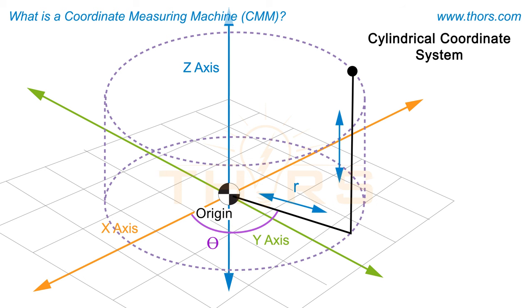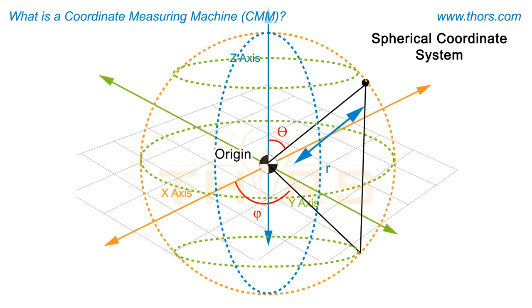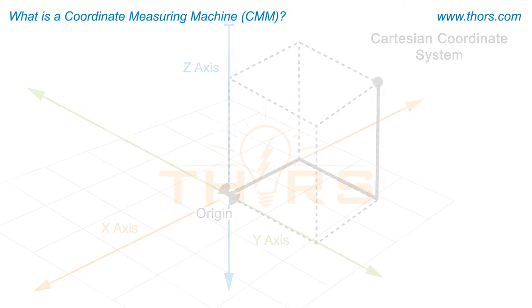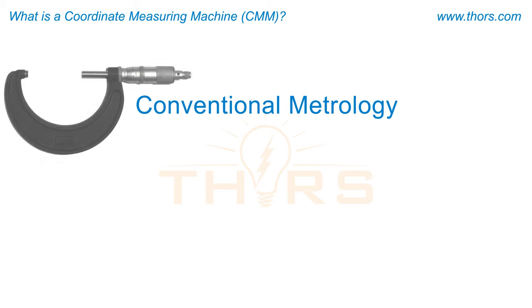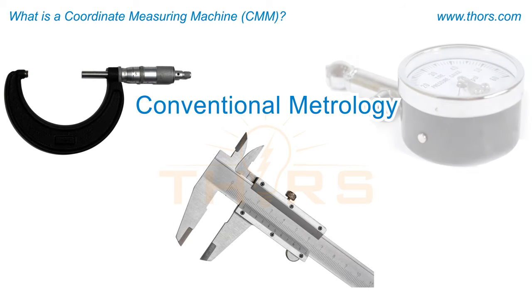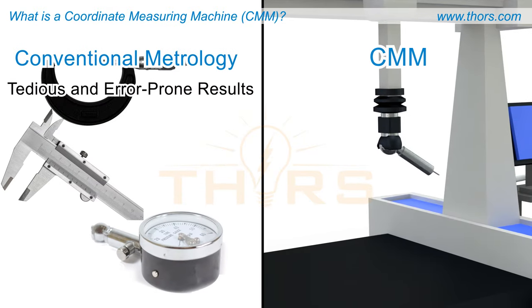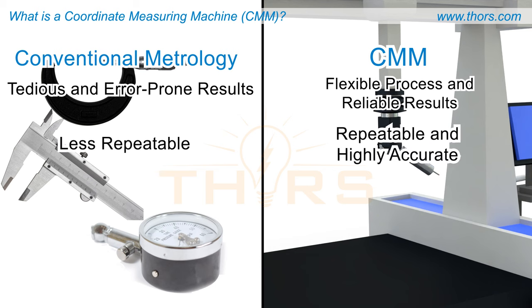CMMs allow coordinates of points obtained in one coordinate system to be converted to another coordinate system. A CMM has many advantages over conventional metrology. Measurements using conventional metrology require different instruments for different measuring needs, making the process tedious and error-prone. A single CMM serves multiple measuring needs of multiple complexities, making it more flexible and adaptable. Being an automated process driven by software and programs, CMMs are repeatable and produce highly accurate results.